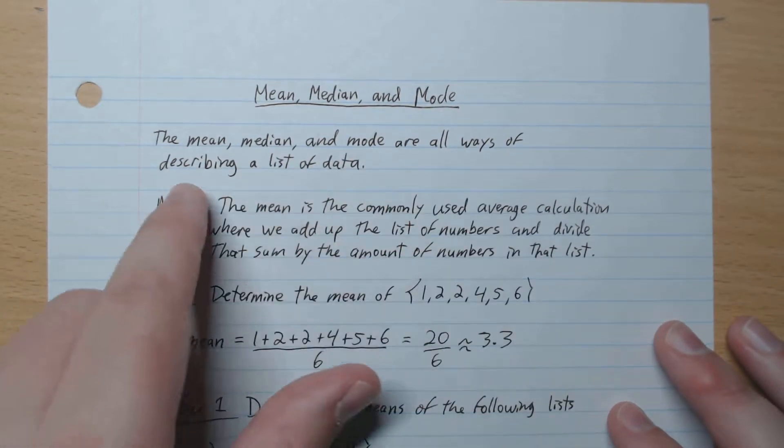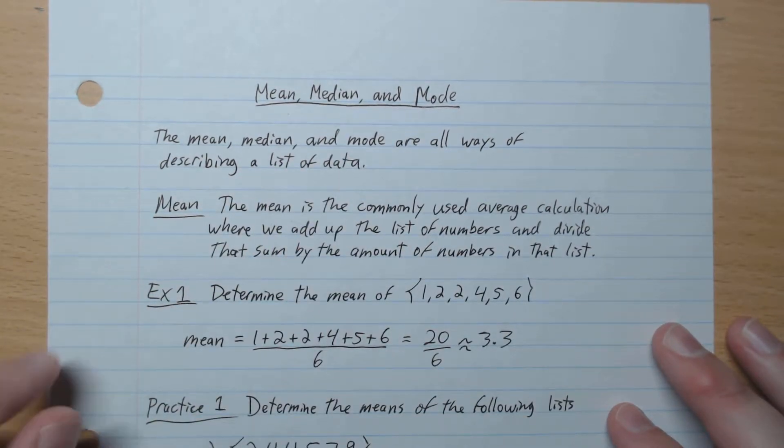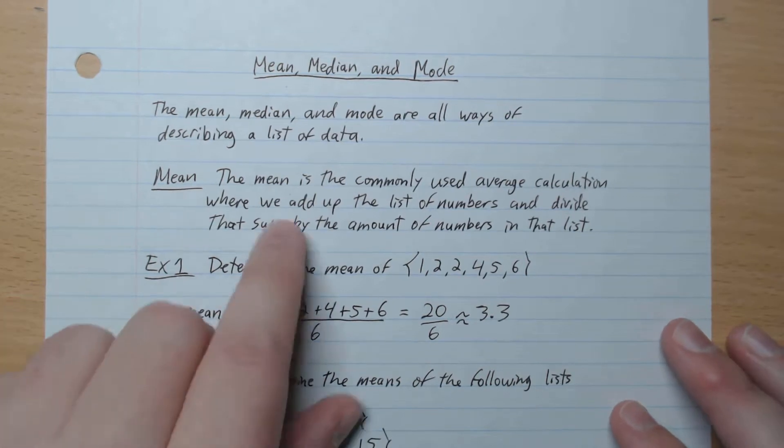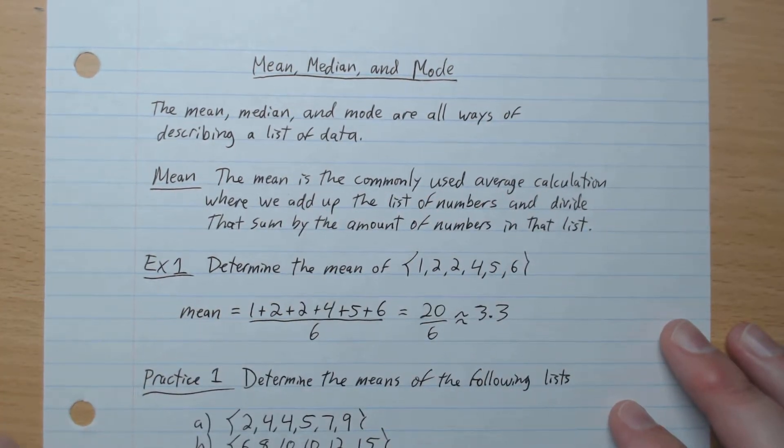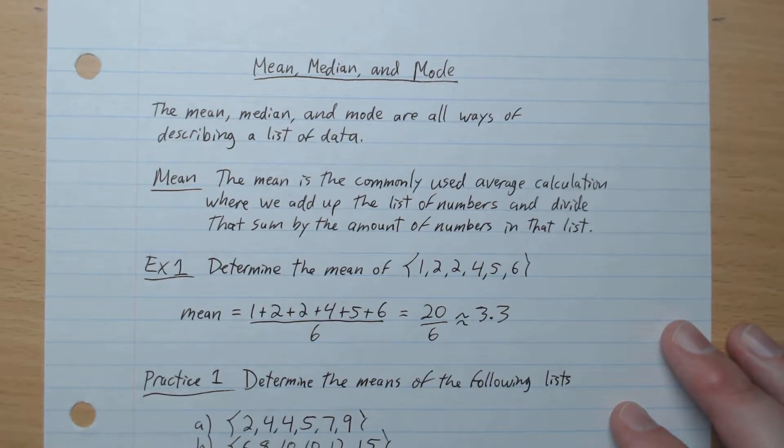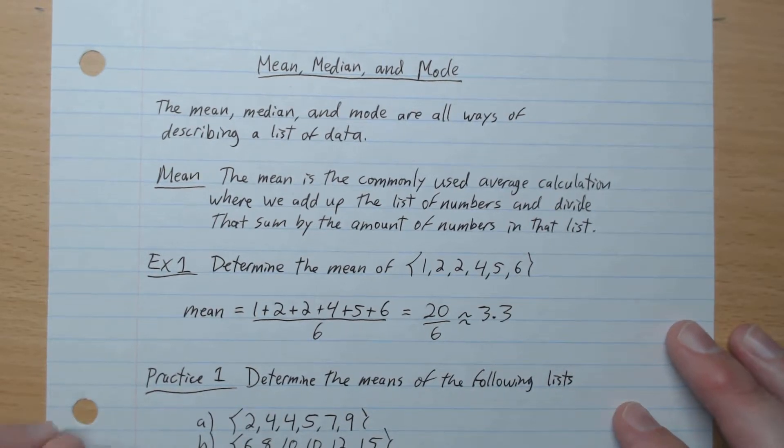So the mean, median, and mode are all ways of describing a list of data. So what is the mean? The mean is the commonly used average calculation where we add up the list of numbers and divide that sum by the amount of numbers in that list.